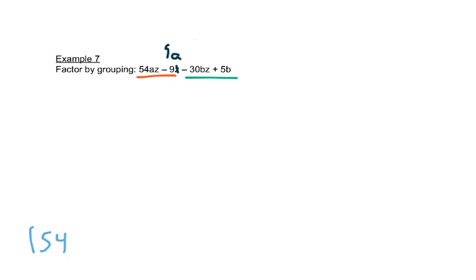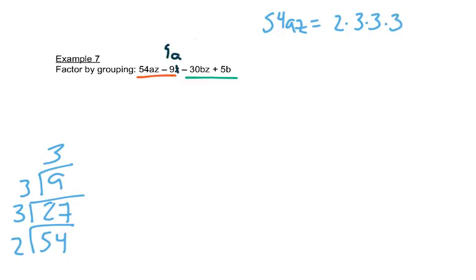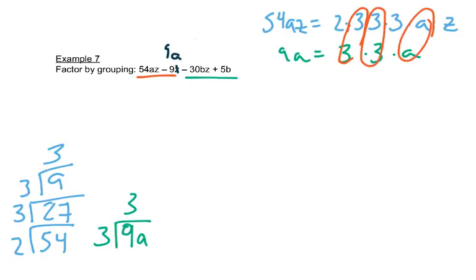If I have 54, I can divide that by 2 and I get 27. I can divide 27 by 3 and I get 9, and I can divide 9 by 3 and I get 3. So 54az would be 2 times 3 times 3 times 3 times a times z. We have 9a, so we'd have 3 times 3 times a. We look at what they have in common: they both have 3 and another 3 and an a. So 3 times 3 is 9a.